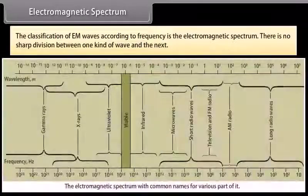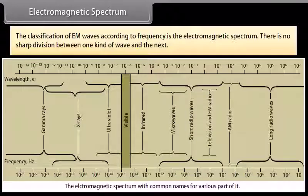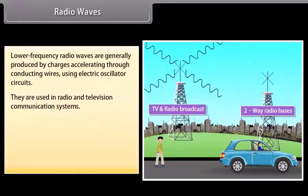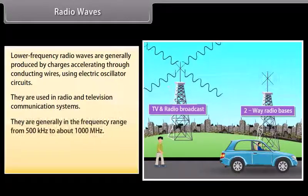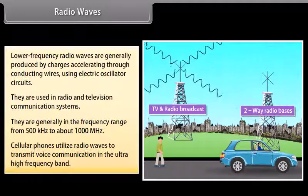Electromagnetic spectrum. The classification of EM waves according to frequency is the electromagnetic spectrum. There is no sharp division between one kind of wave and the next. The classification is based on how the waves are produced or detected. Let us describe these different types of electromagnetic waves in order of decreasing wavelengths. Radio waves: Lower frequency radio waves are generally produced by charges accelerating through conducting wires using electric oscillator circuits. They are used in radio and television communication systems. They are generally in the frequency range from 500 kHz to about 1000 MHz. Cellular phones utilize radio waves to transmit voice communication in the ultra-high frequency band.